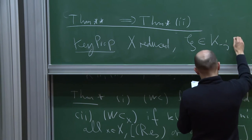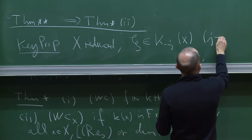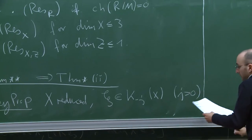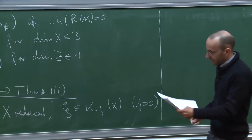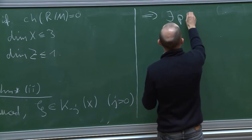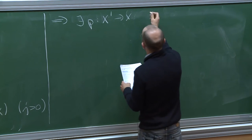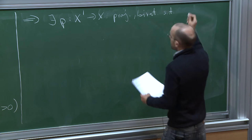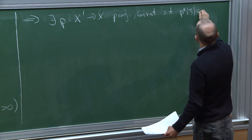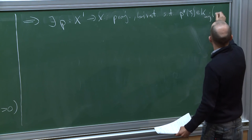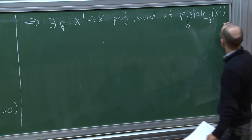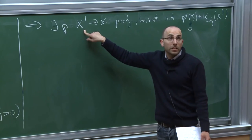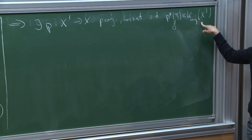Key proposition: consider a reduced scheme X and a K-theory class ξ in K_{-j} of X, where j is any positive integer. Then there exists a modification p from X' to X — a proper birational map — such that the pullback p*(ξ) in K_{-j} of X' vanishes. If you had a resolution of singularities of X, you could just take X' as this resolution since it would kill all classes. This proposition is a replacement for resolution of singularities.